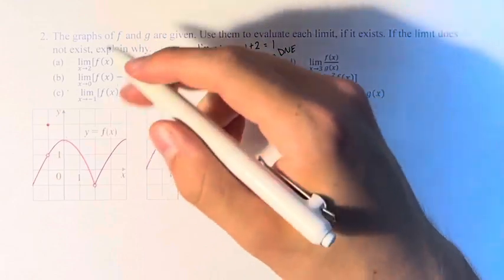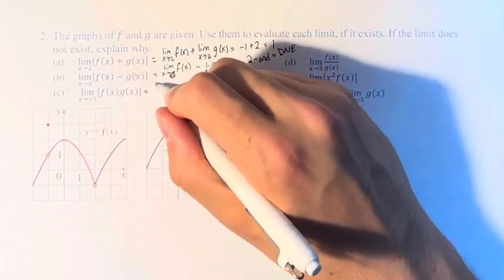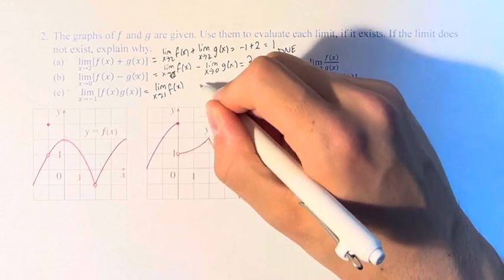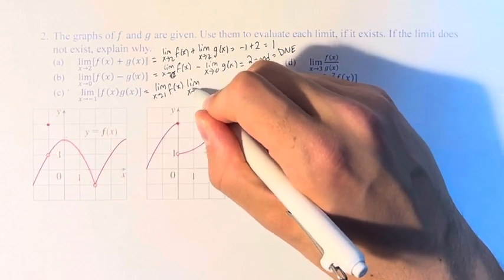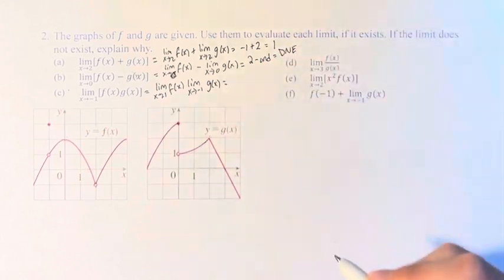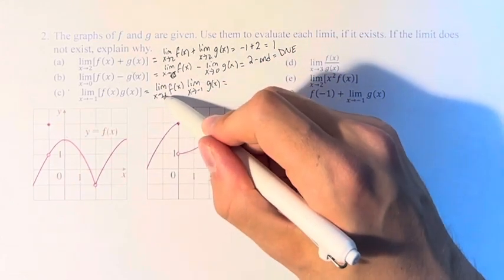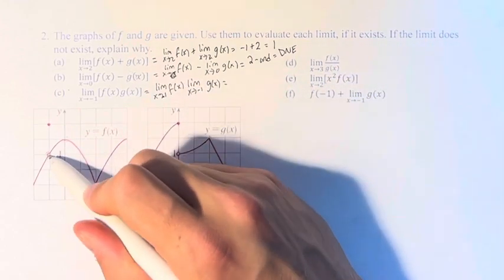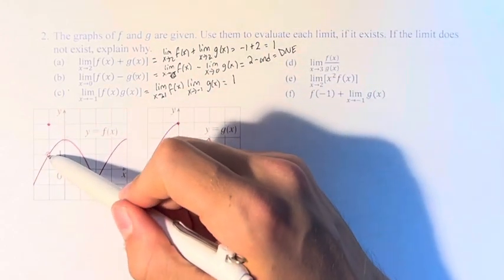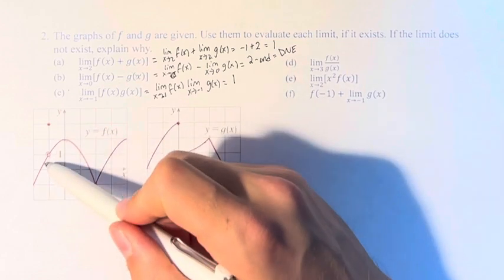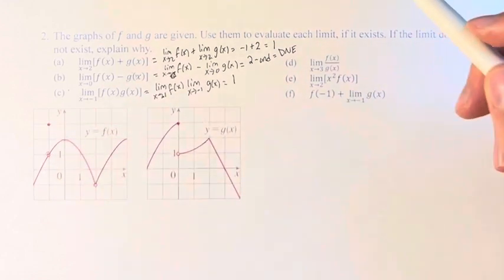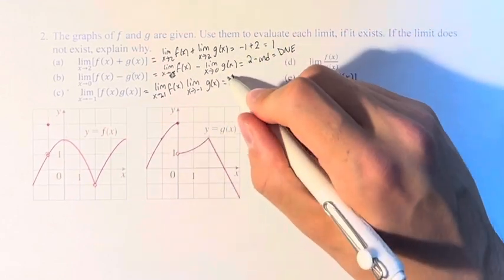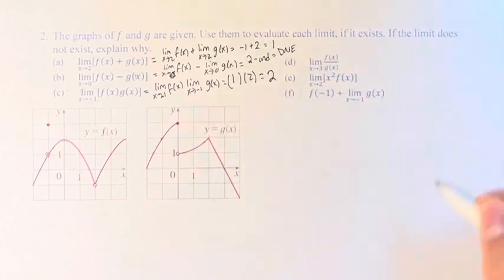Here we have the limit as x approaches negative 1 of this product. We take the product of the individual limits. As x approaches negative 1, f(x) approaches this point right here with a value of 1. Note that that's different from the actual value of the function, which is way up here at 3. But as it approaches negative 1, it approaches this point which is 1. And for g(x), it simply approaches this point right here with a value of 2. So this is 1 times 2, which is 2.